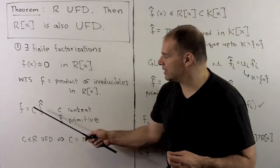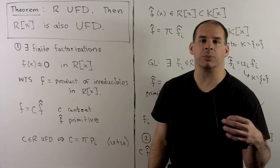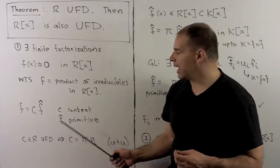I can write f as c times f̂, where c is the content of f. f̂ is a primitive polynomial for R.